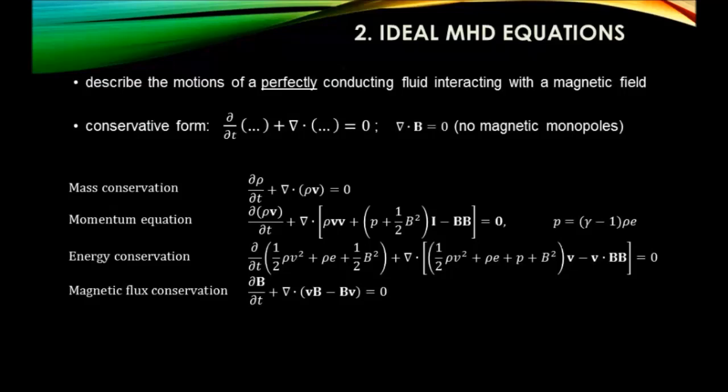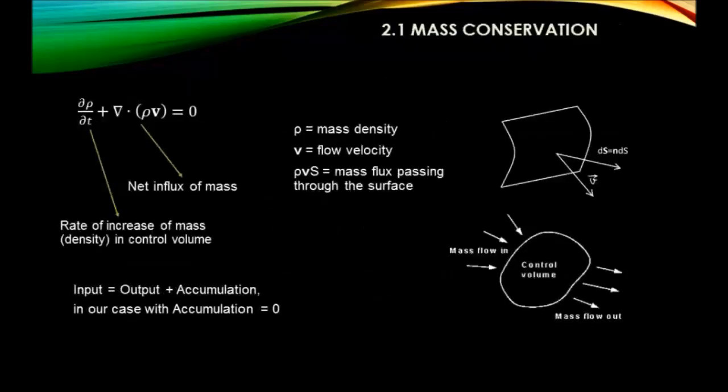We also assume the divergence of B is zero - there are no magnetic monopoles, because none have been observed. The ideal MHD equations consist of mass, momentum, energy, and magnetic field conservation. I'll start with mass conservation. The first equation says that the rate of change in density within a control volume must equal how much flux remains in that volume as the plasma moves.